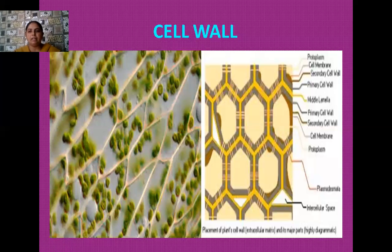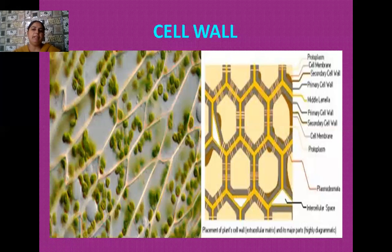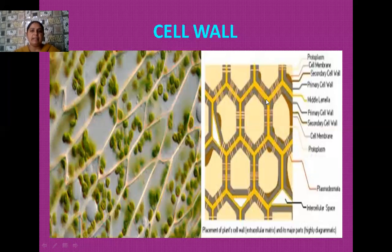Inside the plasma membrane, a jelly-like substance is present known as the protoplasm. The protoplasm is actually the sum of the cytoplasm and the nucleoplasm. Many pore-like structures known as plasmodesmata are present between the cell wall as well as in the middle lamella. Through these plasmodesmatal connections, the continuity of cytoplasm is maintained between neighboring cells. The cells are compactly arranged but certain intercellular spaces are also present.